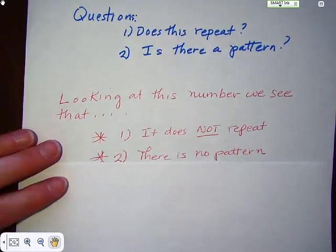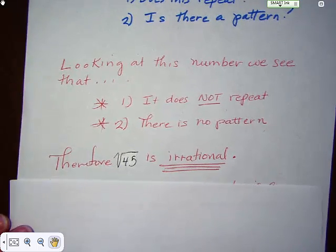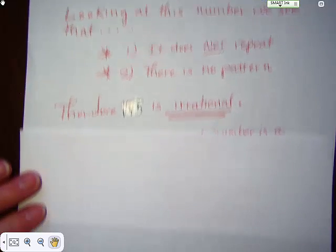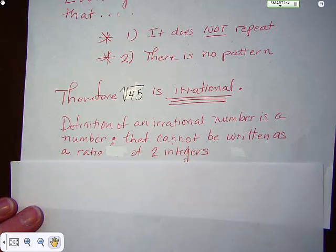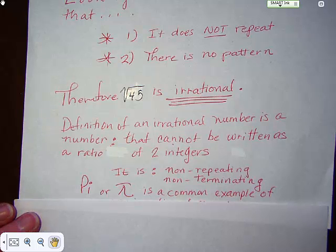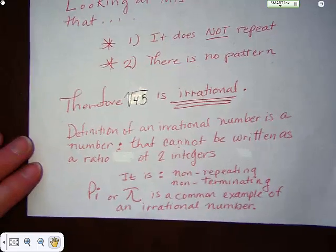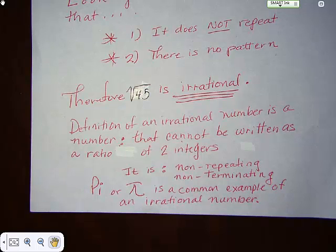Looking at this number, we see there isn't a pattern and it doesn't terminate. Therefore, the square root of 45 is an irrational number. An irrational number is a number that cannot be written as a ratio of two integers. If it is non-repeating, non-terminating, and has no pattern, then it is irrational. A common example of an irrational number that we use all the time is pi — pi goes on and on without repeating forever, with no pattern to it.